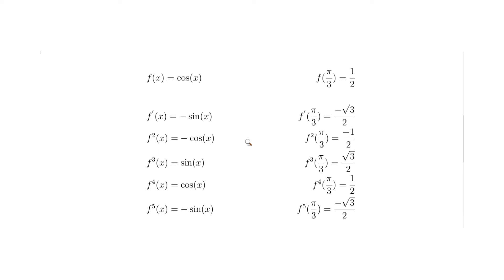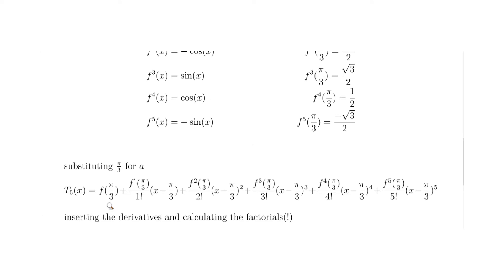Next we substitute π/3 for all the 'a' values in the formula, giving f(π/3) plus the first derivative at π/3 times (x − π/3), and so on for each term up to degree 5. It's good to do this one step at a time to avoid mistakes. The fifth derivative at π/3 gives −√3/2 divided by 5 factorial, and the fourth gives 1/2 divided by 4 factorial.